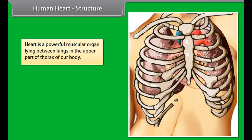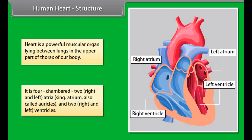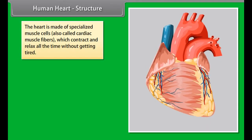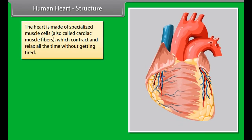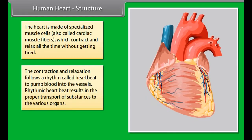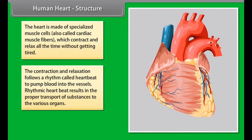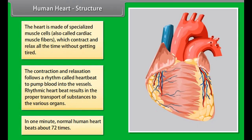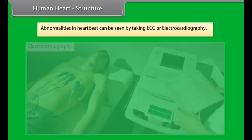The human heart is a powerful muscular organ lying between the lungs in the upper part of the thorax. It is four-chambered: two right and left atria, also called auricles, and two right and left ventricles. The heart is made of specialized cardiac muscle fibers which contract and relax continuously without getting tired. This rhythmic heartbeat pumps blood into the vessels. In one minute, the normal human heart beats about 72 times. Abnormalities in heartbeat can be detected by ECG, or electrocardiography.